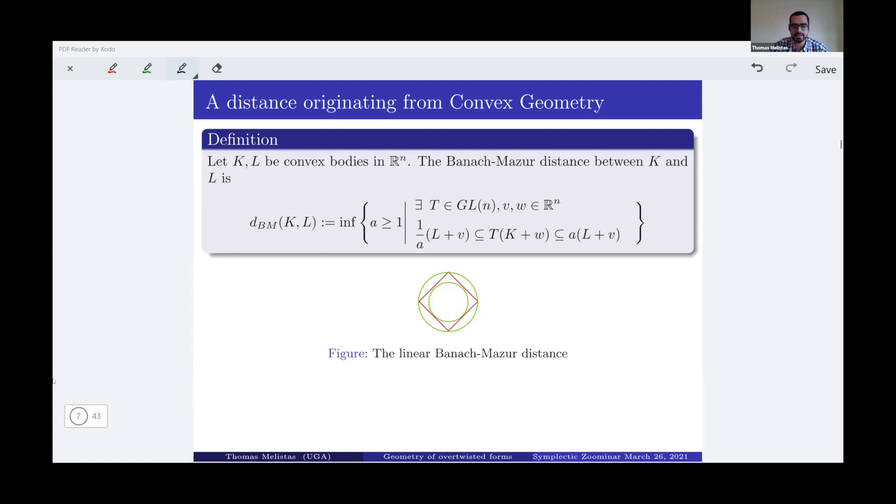So as I said, we need a distance in the space of contact forms. The origins of that distance is the Banach-Mazur distance between two convex bodies. For the Banach-Mazur distance between two convex bodies, what I can do is first of all I want to interleave them in this way. So I'm allowed to translate my first body by a vector V, my second body by vector W, and then I can act by GL_N on this translated convex body, and then I can rescale the translation of L by some number A, and the optimal way to do that should give me the Banach-Mazur distance.